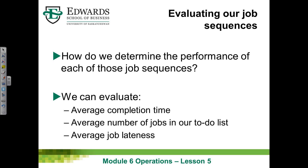How do you evaluate job sequences and determine how good they are? Operations management analysts compute several measures. Three key ones are: average completion time — when were the jobs done; average number of jobs in the to-do list — how many things are waiting to be done; and average job lateness — because some jobs may not be completed before their due date. These measures help you evaluate how good your job sequence is.